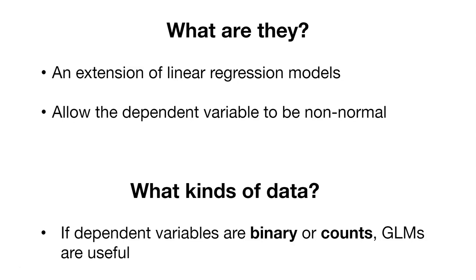So what kinds of data do generalized linear models work well for? Well, they work really well if the dependent variables are binary or counts. When we say binary, our outcome is usually a yes or no, or a zero or one. When we have binary data, we can use generalized linear models — in particular, logistic regression — to say something about the response variable of interest.